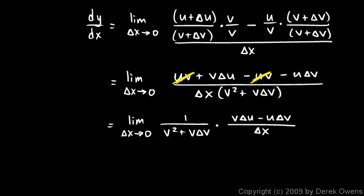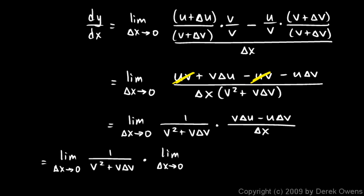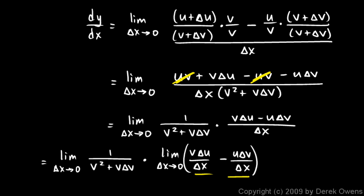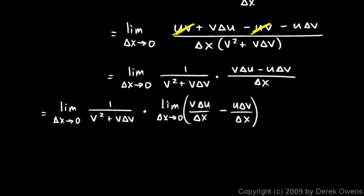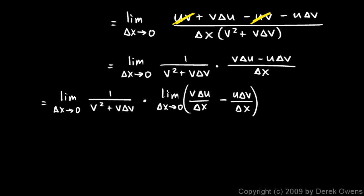This can be written as the limit as delta-x approaches 0 of 1 over (v squared plus v·delta-v), times the limit as delta-x approaches 0 of (v·delta-u over delta-x minus u·delta-v over delta-x). As delta-x gets really small, delta-u and delta-v also get really small, so the delta-v term in the denominator disappears and that first part simply becomes 1 over v squared.